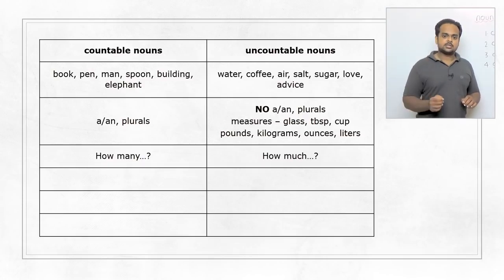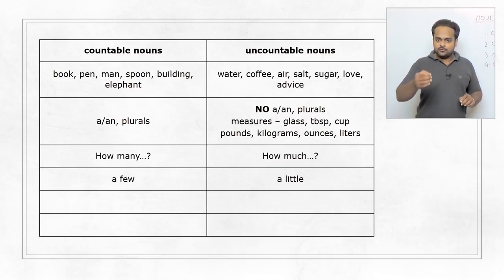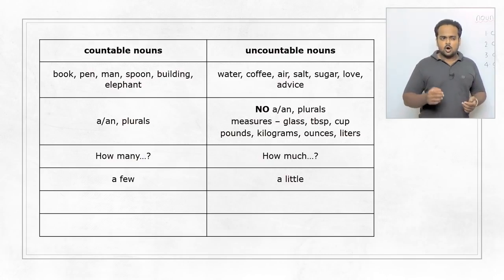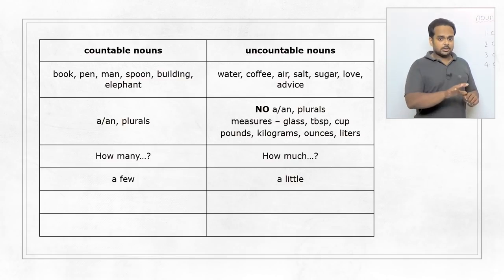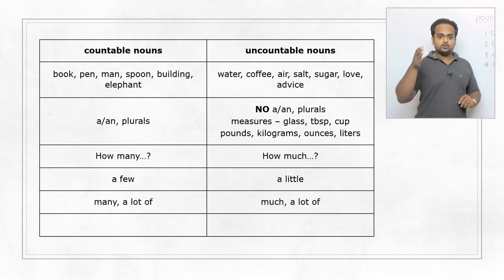In that case, you can use quantity expressions. With countable nouns, we use a few to mean a small number. I can say, there are only a few computers in my office. I don't know the exact number but it's a small number. Or I can say, there's only a little water in the jar. So with uncountable nouns, we use a little. This is very important. And what about to talk about a big number or a big quantity? With countable nouns, we use many or a lot of. There are many computers in my office or there are a lot of computers in my office. With uncountable nouns, we can use much but that's less common. It's more common to use a lot of, like there is a lot of coffee in the cup.